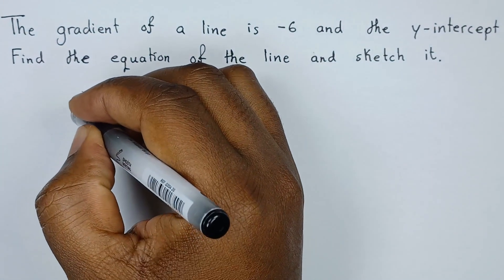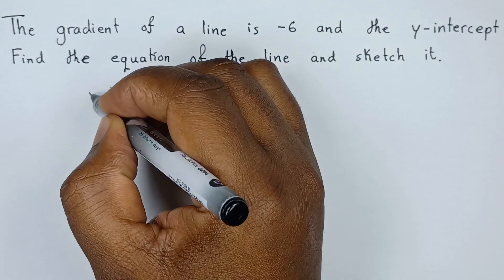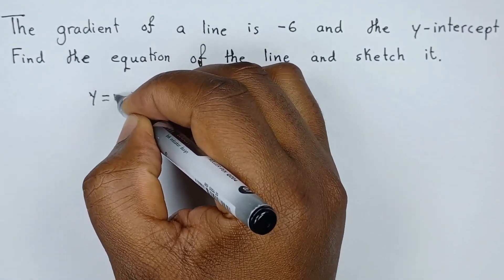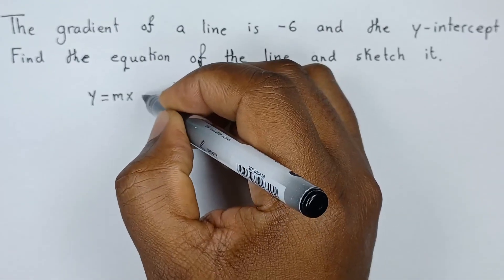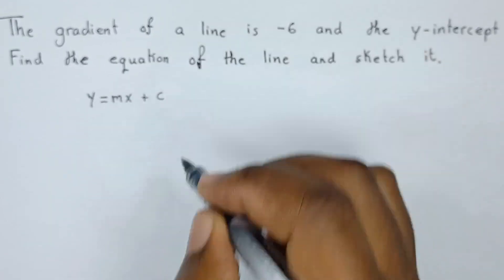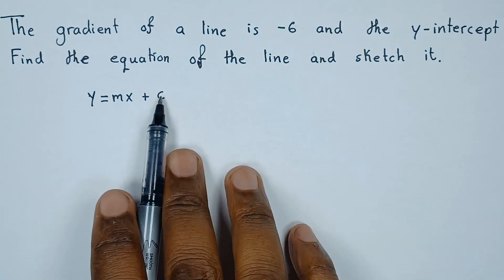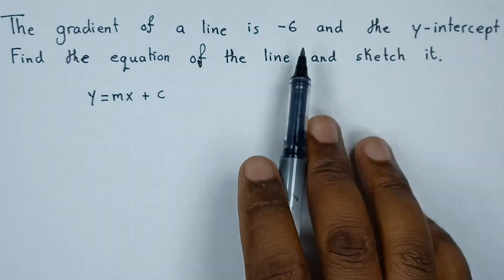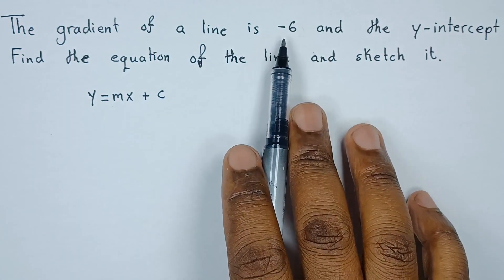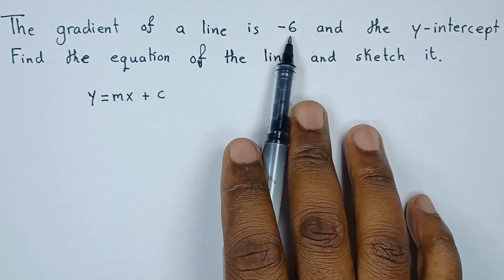So it's important to note that the y-intercept form is given as y equals mx plus c. Since the y-intercept is 2, then the value of c is simply 2. The gradient is negative 6, hence the value of m is negative 6.